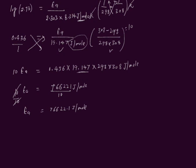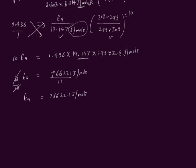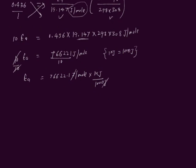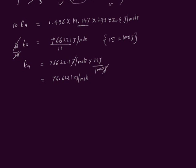The unit of activation energy is expressed in kJ per mole, but our result is in joules per mole. Since 1 kJ equals 1000 joules, we multiply by 1 kJ divided by 1000 joules. Joules cancel out, and dividing by 1000 gives Ea equals 76.6222 kJ per mole. This is the activation energy of the reaction.